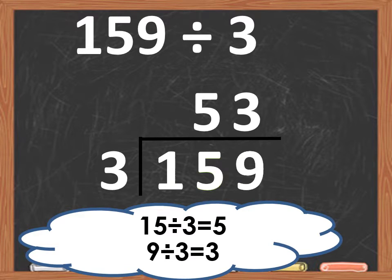And there you have it. Our quotient is 53. 159 divided by 3 is 53.